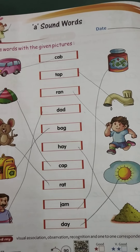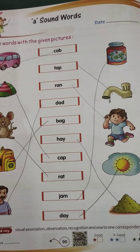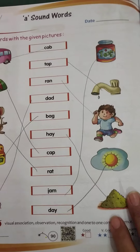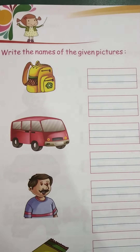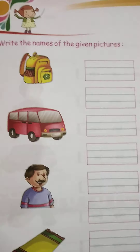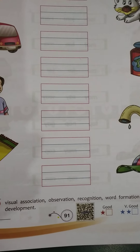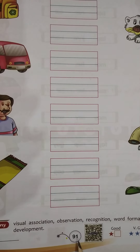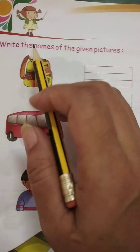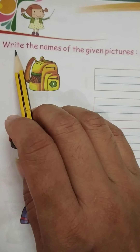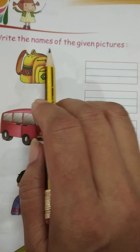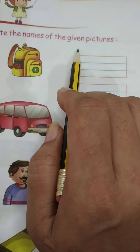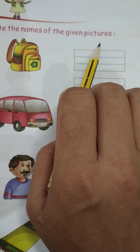You have to complete this page. And the next page is page number 91: write the names of the given pictures.